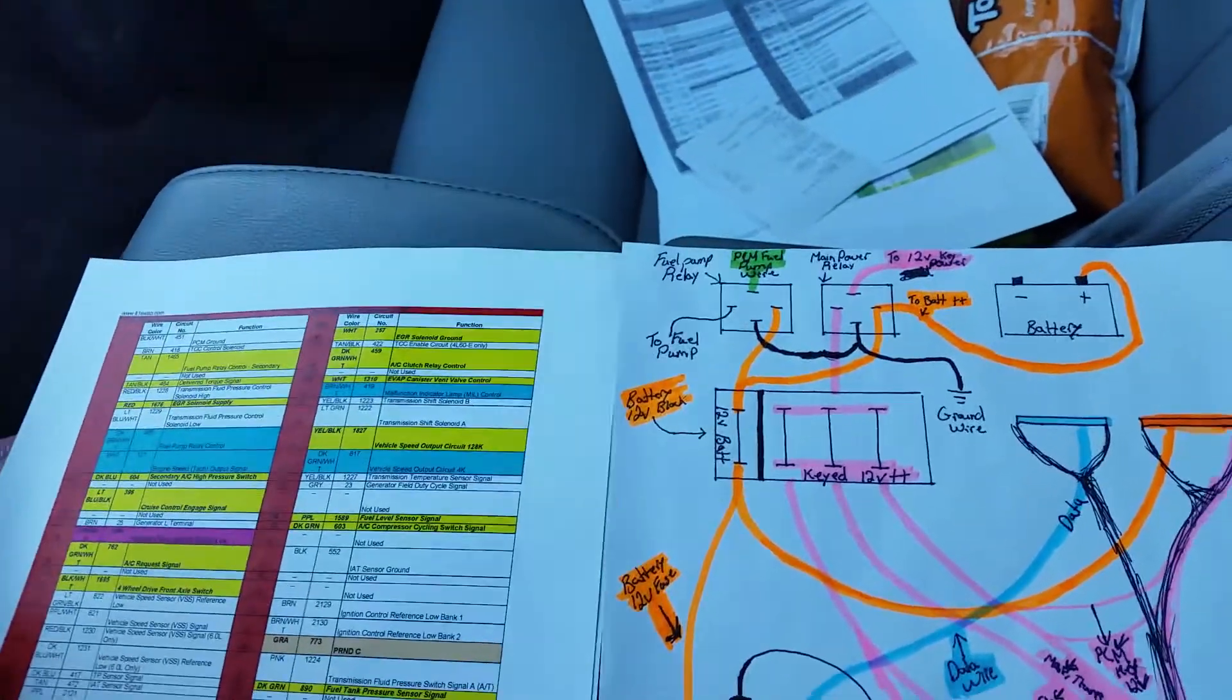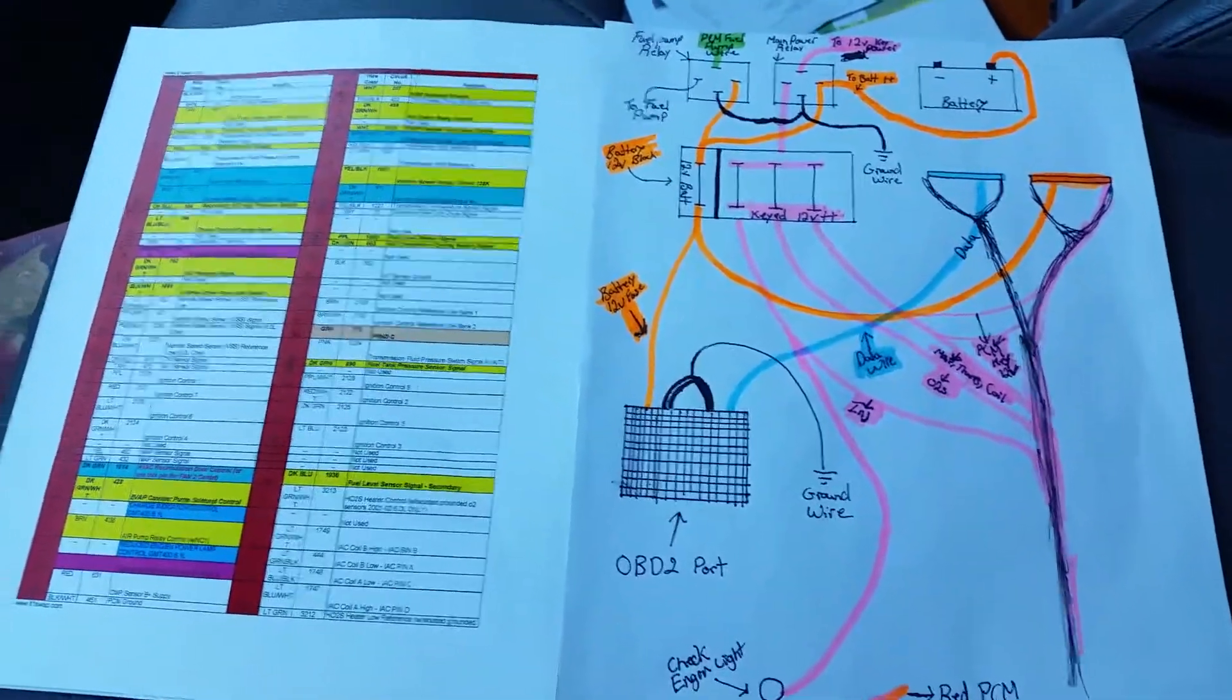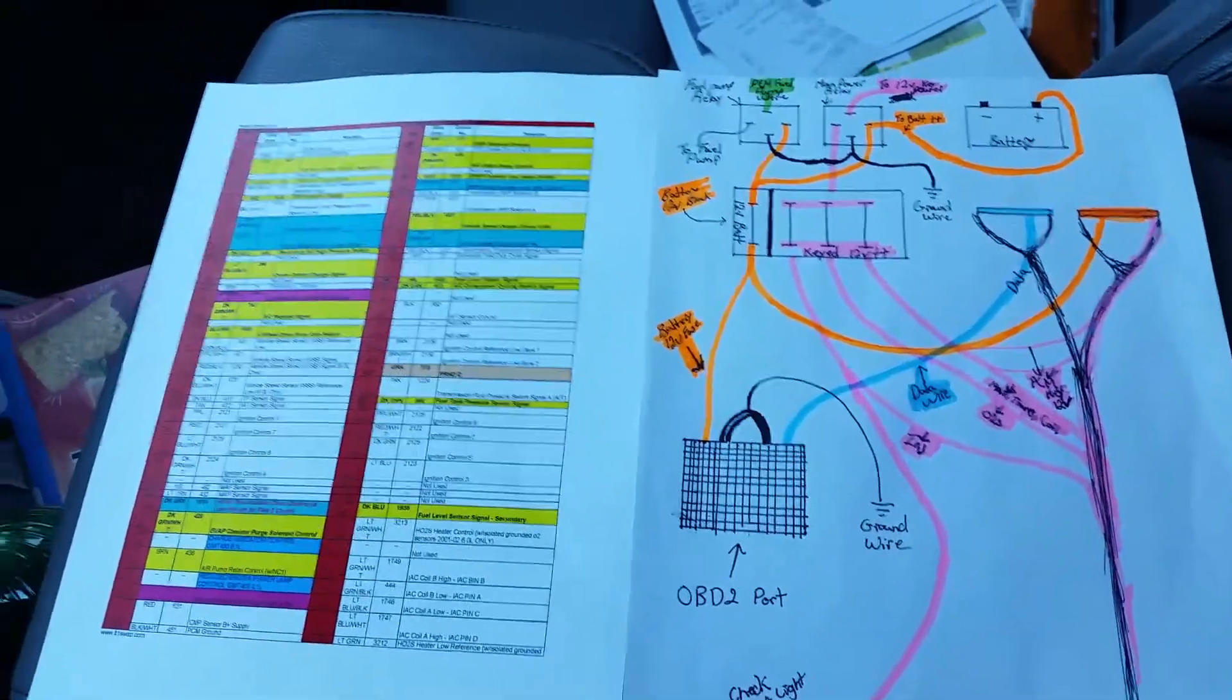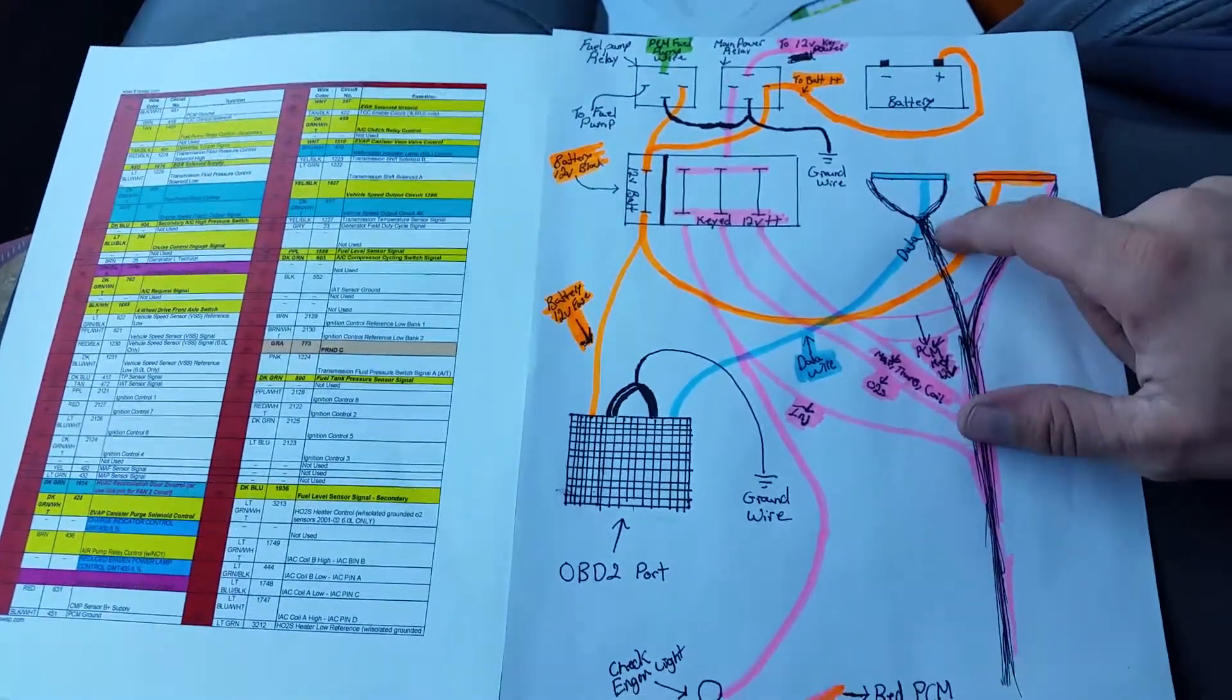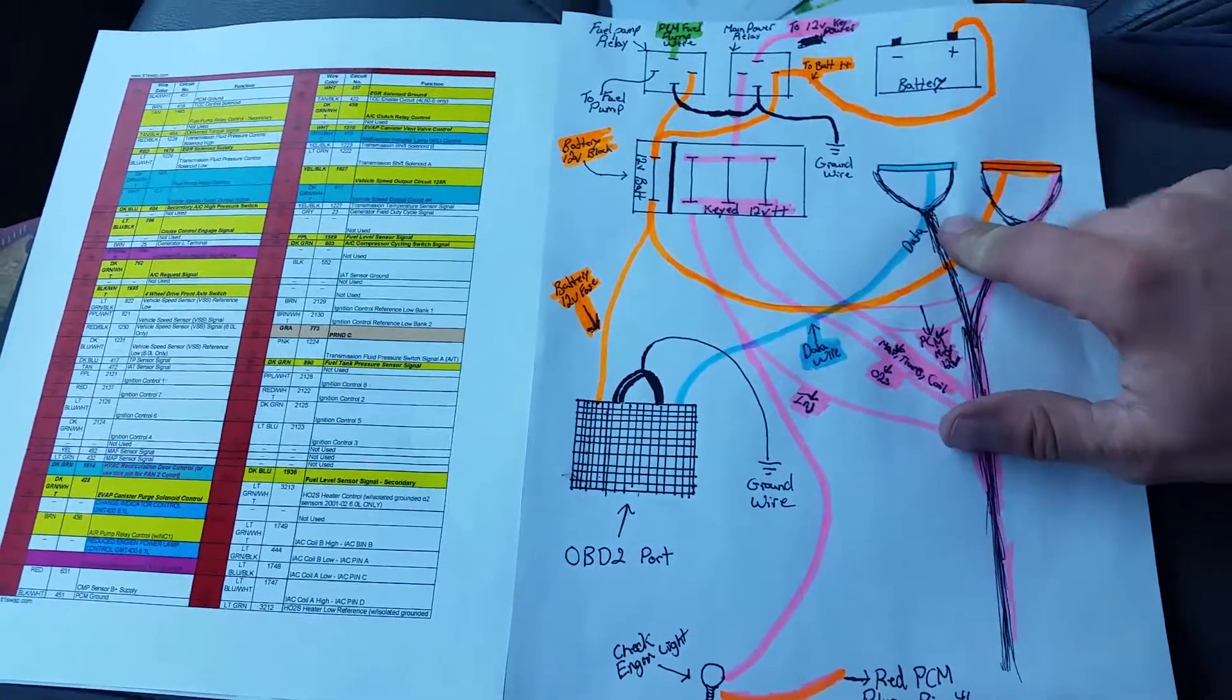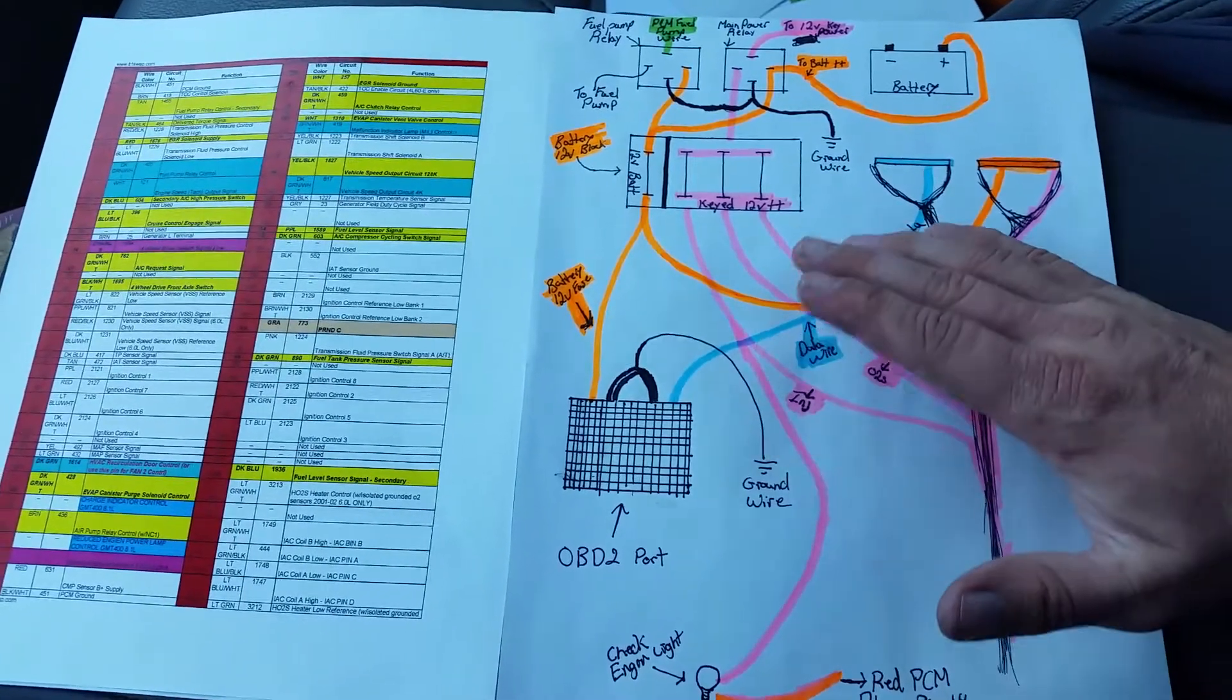I will be using the 4L60E transmission behind this. In order for this all to work, you have to have your PCM flashed, which means you have to have someone take the VATS off - VATS stands for Vehicle Anti-Theft System.